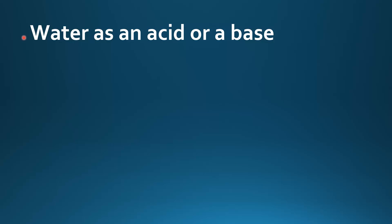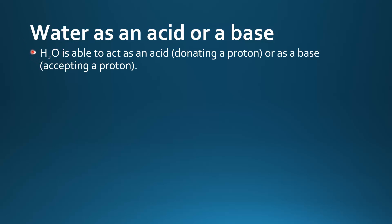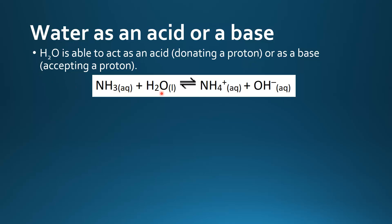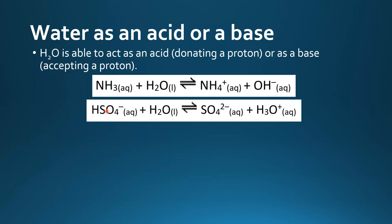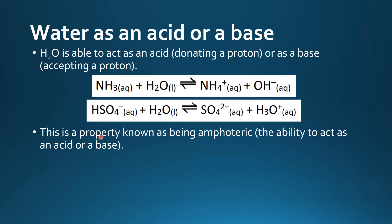Next we look at water as an acid or a base. H₂O is able to act as an acid by donating a proton, or as a base by accepting a proton. In one equation, water is donating a proton to ammonia, which makes water a Brønsted-Lowry acid. In another equation, HSO₄⁻ is donating a proton to H₂O, which is accepting a proton, making it a Brønsted-Lowry base. This property is known as being amphoteric — the ability to act as an acid or a base. So water is amphoteric.